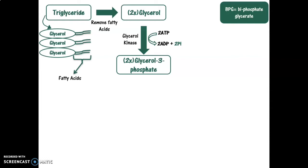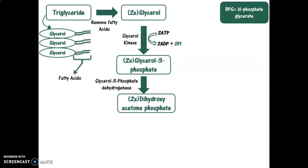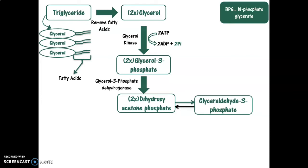Now the glycerol-3-phosphate molecules are present. Another enzyme, glycerol-3-phosphate dehydrogenase, will convert glycerol-3-phosphate into dihydroxyacetone phosphate and glyceraldehyde-3-phosphate. This step is really important because glyceraldehyde-3-phosphate is essentially needed for the formation of glucose. Dihydroxyacetone phosphate is the isomer of glyceraldehyde-3-phosphate, but its structure cannot yield the products needed for glucose production. Therefore, dihydroxyacetone phosphate will be converted into its isomer, glyceraldehyde-3-phosphate, forming two glyceraldehyde-3-phosphate molecules.